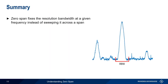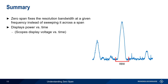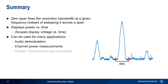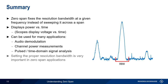In summary, Zero-Span fixes a resolution bandwidth at a given frequency instead of sweeping it across a span. When Zero-Span is enabled, the analyzer displays power versus time within the resolution bandwidth. This is similar to how an oscilloscope displays information, but scopes typically display voltage, not power, as a function of time. Zero-Span can be used for many applications such as audio demodulation, channel power measurements, and analyzing the envelope of pulsed or other time-varying signals. Don't forget that using the proper resolution bandwidth is of critical importance in any Zero-Span application. This concludes our presentation, Understanding Zero-Span. Thanks for watching.